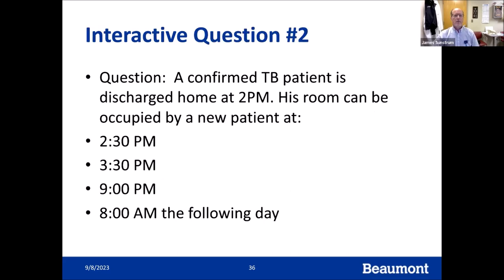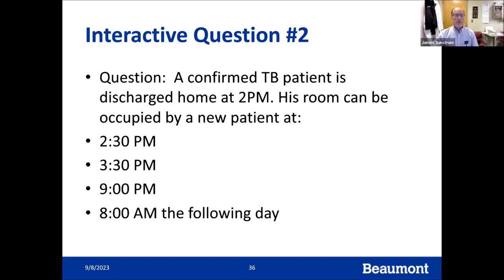Case question two: A confirmed TB patient is discharged home at 2 p.m. — when can the room be occupied by a new patient? If discharged at 2 p.m., by 3:30 — about an hour and a half — there have been a significant number of air exchanges in the room. It would be safe for housekeeping to go in within an hour, clean the room, prepare it for the next patient, and safely bring a new patient in. 60 minutes is needed.